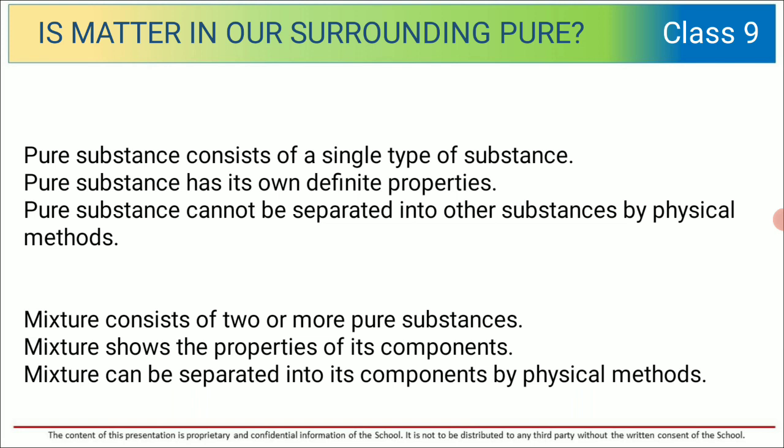It is very important to understand and write these differences properly. Pure substance consists of a single type of substance. Mixture consists of two or more pure substances, so we can say that a mixture is made up of pure substances. Pure substance has its own definite properties, whereas a mixture shows the properties of its components.